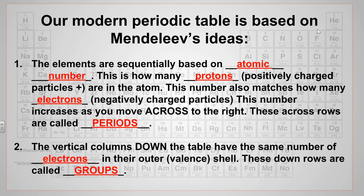These arrows, or these across rows, are called periods. So the rows that go across are called periods. The vertical columns that go down the table have the same number of electrons in their outermost shell, or their valence shell. These down rows are called groups. So to recap, when you're looking at the periodic table, going across are the periods, and down are the groups.